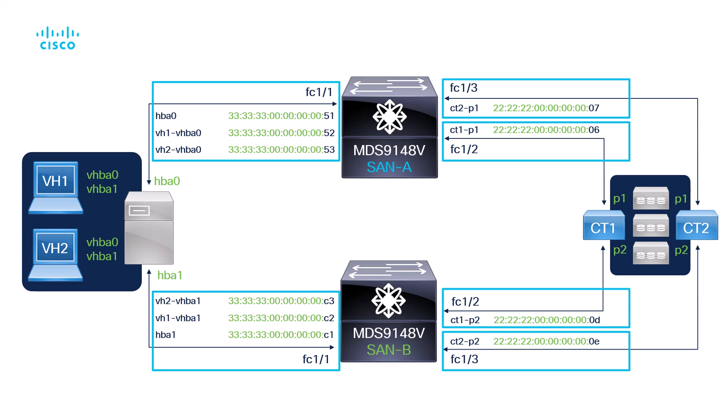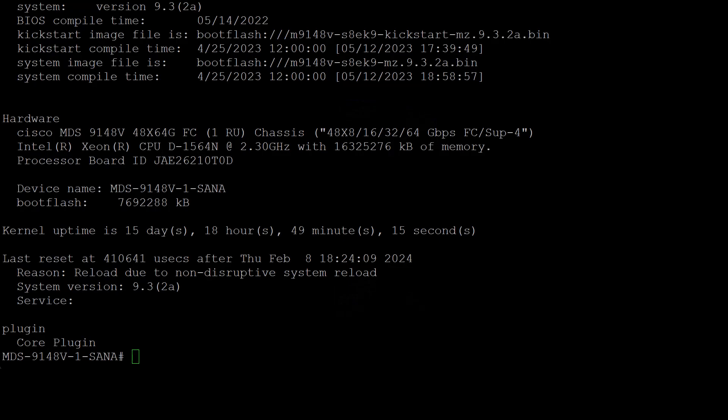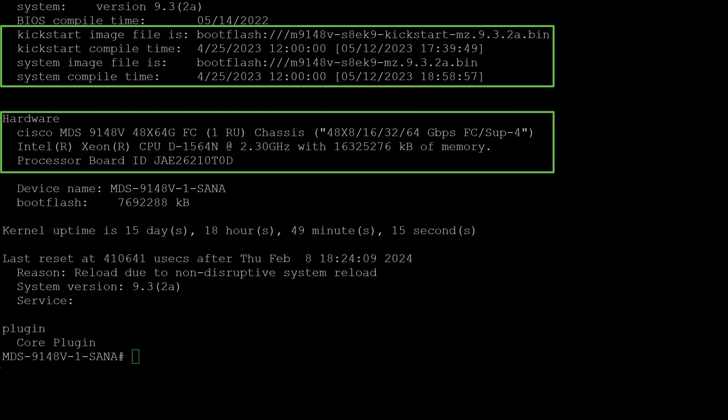To better understand the upcoming configuration section of the video, I suggest you take a snapshot of the above diagram and view it side-by-side while going through the remainder of the video. Now let us move into the switch configuration. This particular model is a 9148V fabric switch running version 9.3.2A.